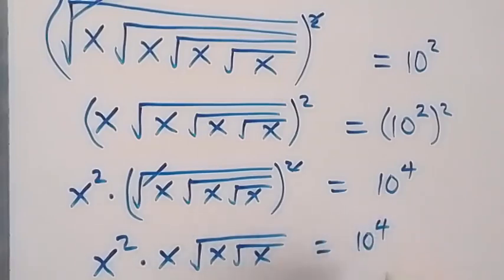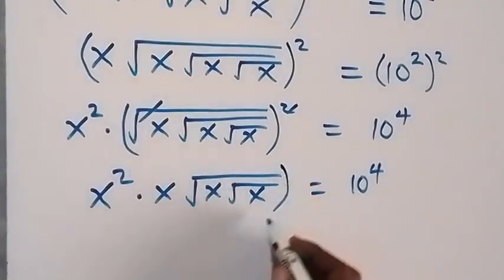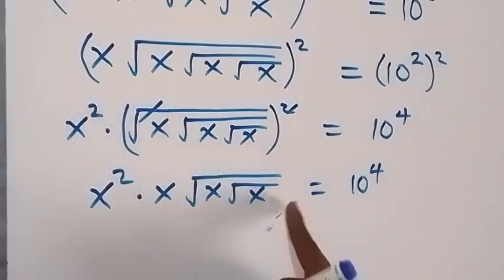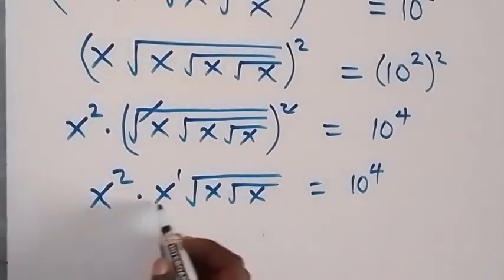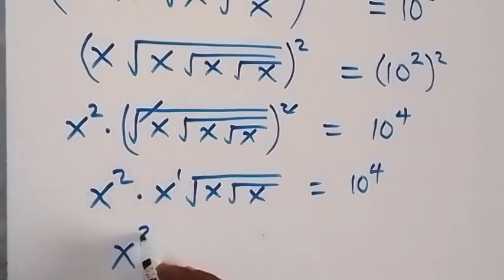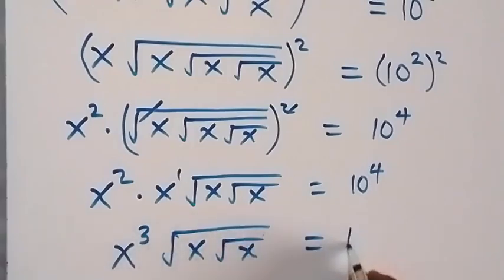Then we also square again. Before squaring, this is x raised to power 1. Let's bring this together using the law of indices, so we have x raised to power 2 plus 1, which is 3, then roots here we have x root x, now equals 10 raised to power 4.